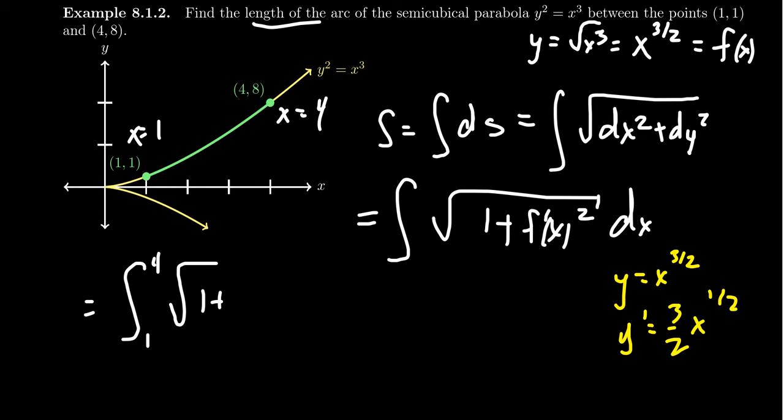And now we need to square that thing. Squaring the 3 halves will give us 9 fourths. And then squaring the square root actually gives us an x, like so, in which case we get a dx right here.